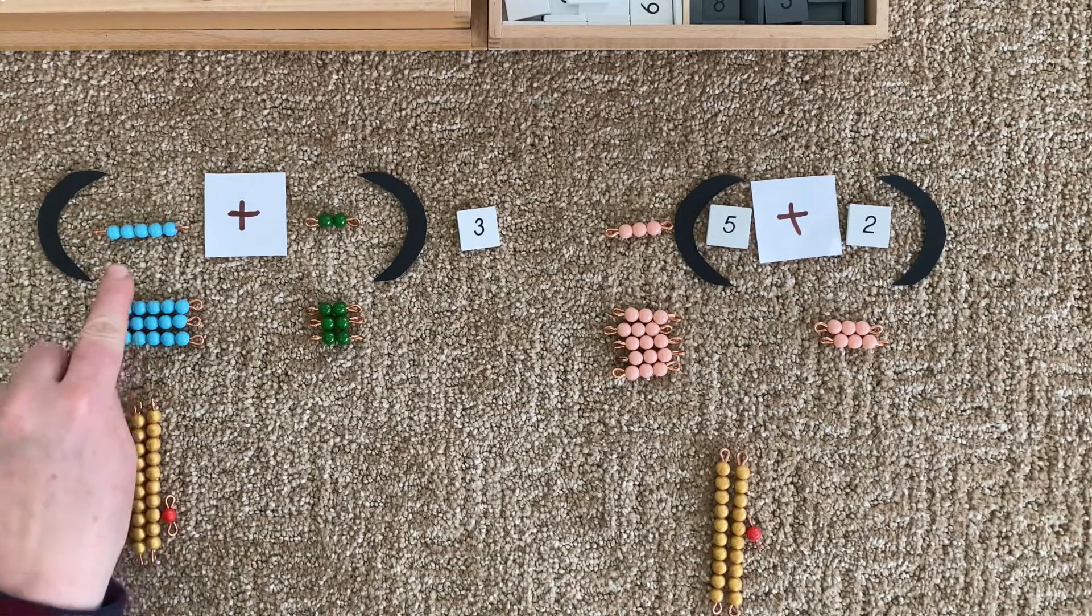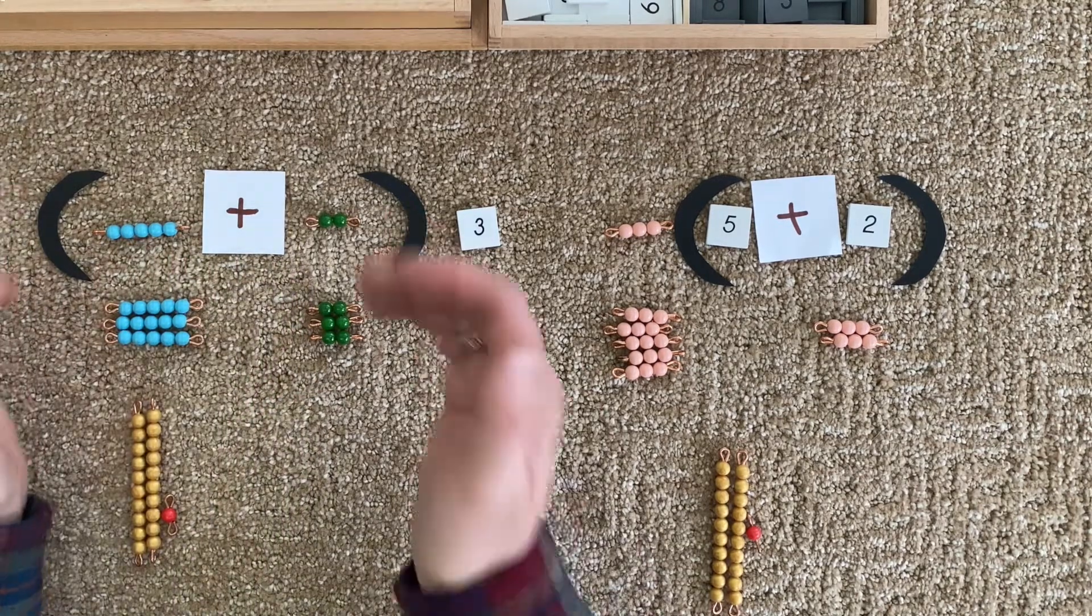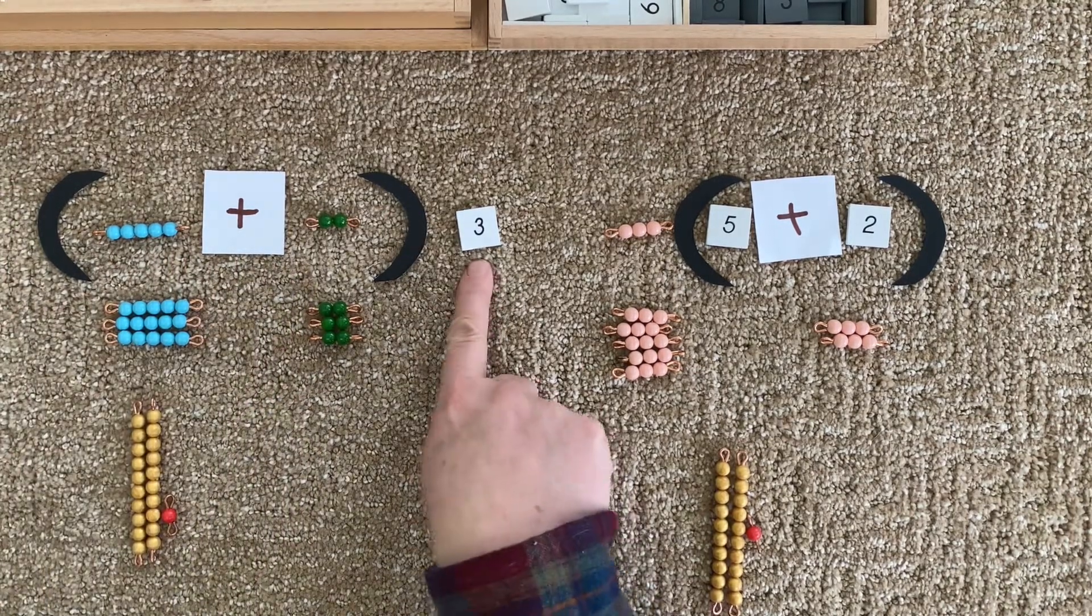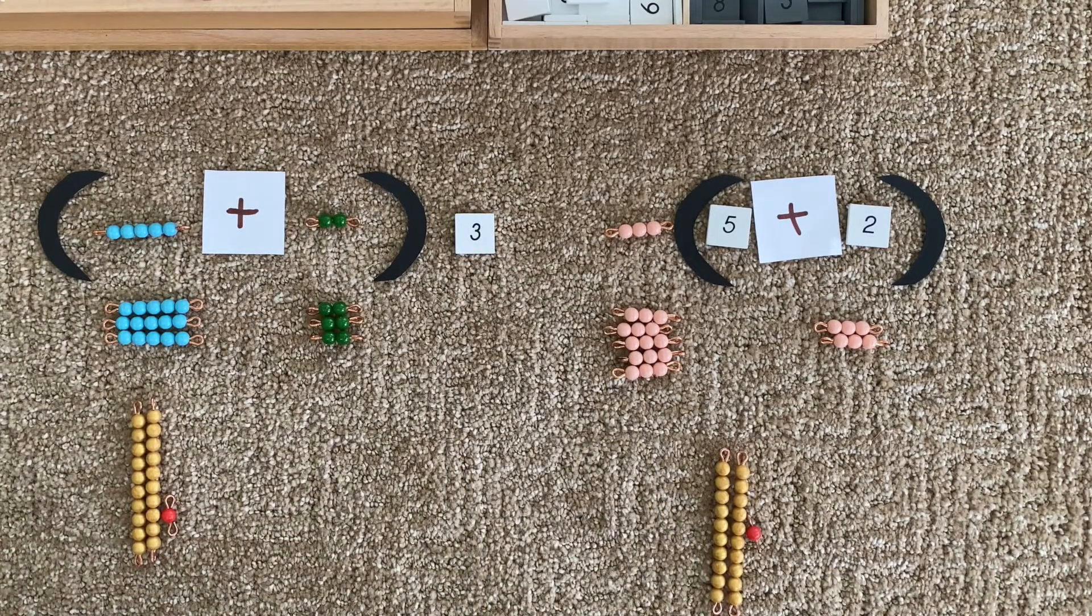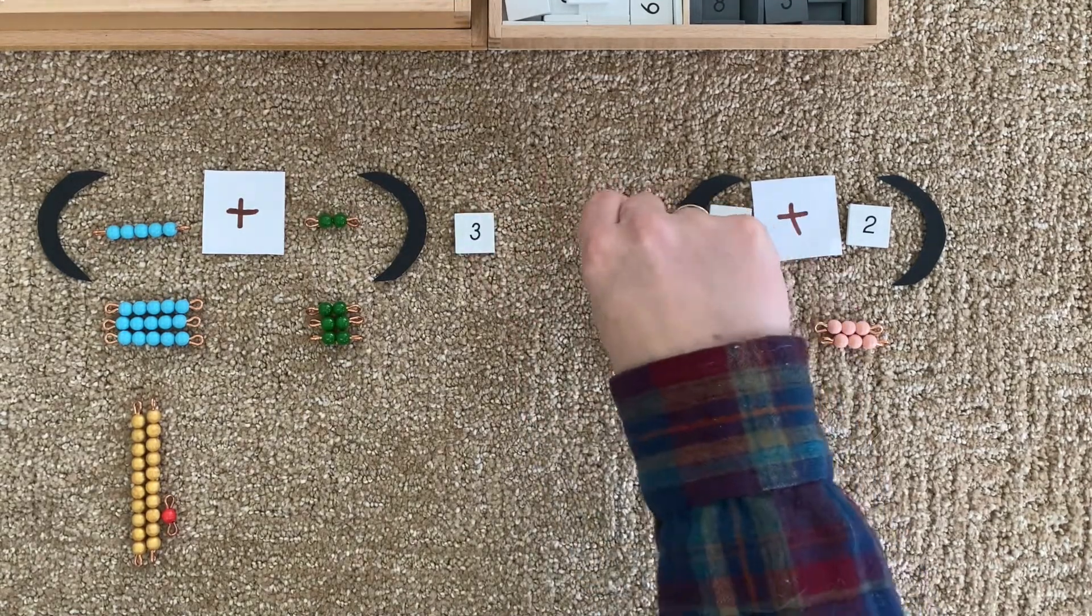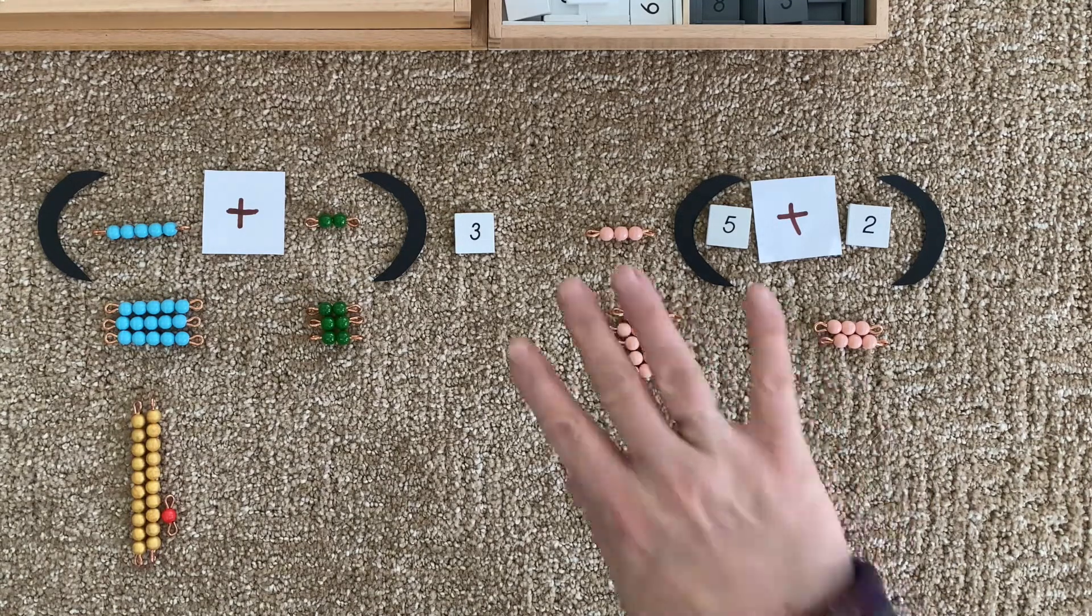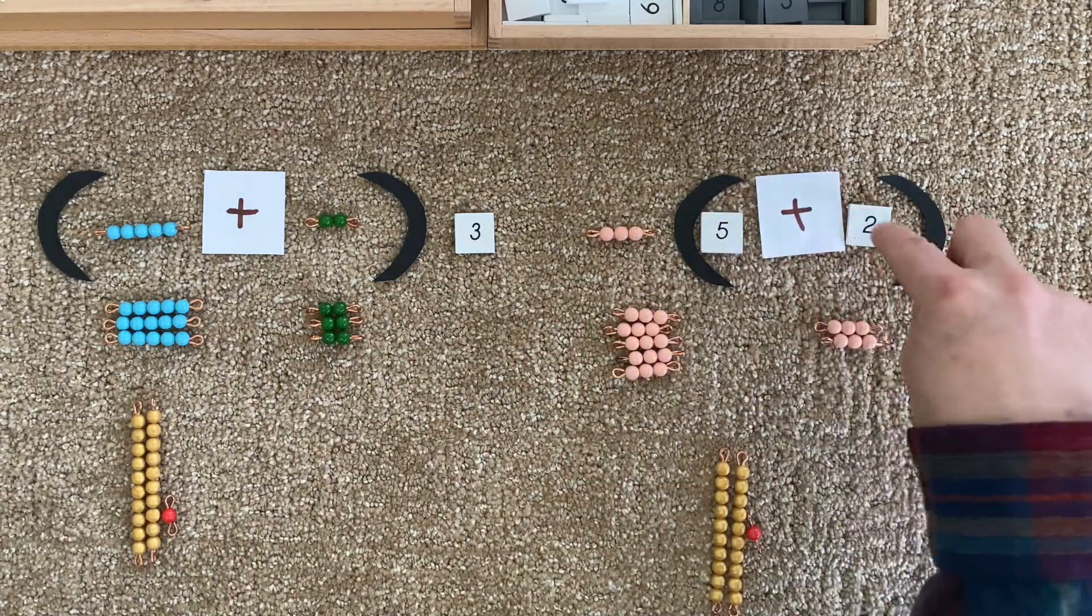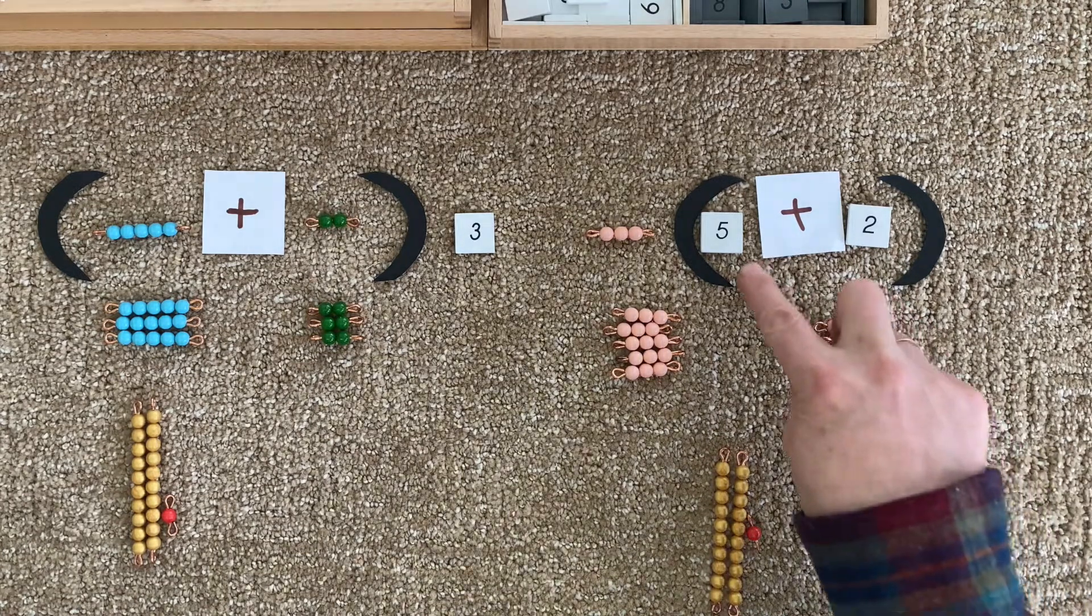I'd like you to explore having a two term multiplicand with beads inside parentheses multiplied with a multiplier tile. And then go ahead and reverse that. Turn the tile into a bead and it will become the multiplicand. And now your two term sum will become the multiplier with tiles.